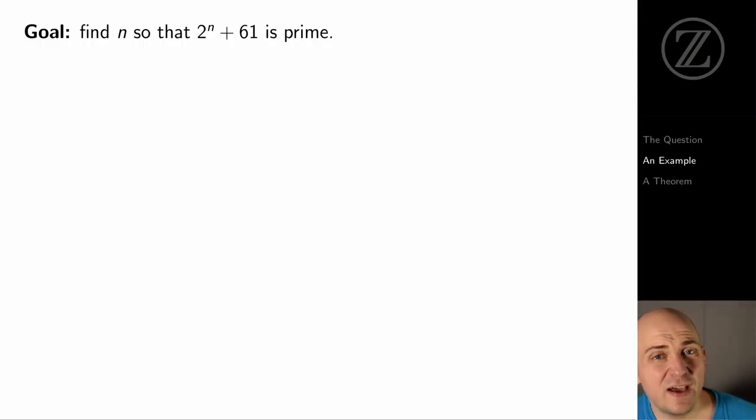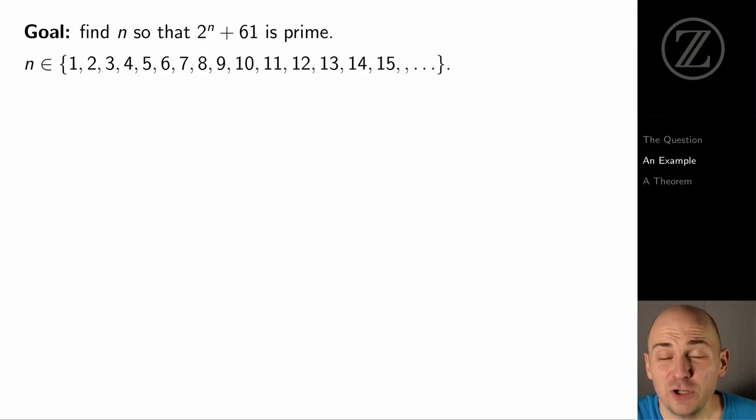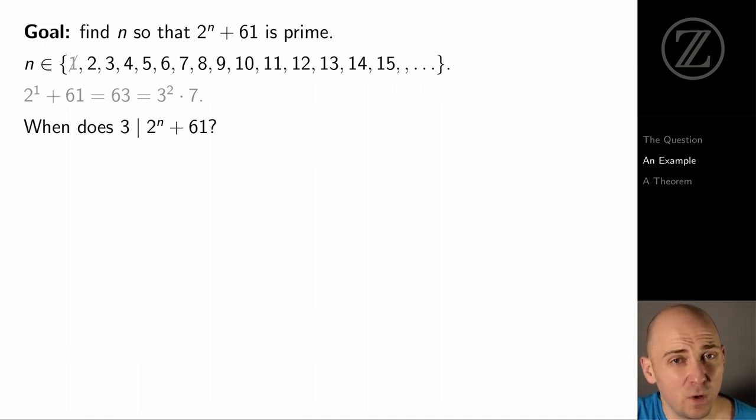So here's our goal. We want to find an n so that 2 to the n plus 61 is prime. We could just start trying different values of n. So when we try n equals 1, we note that 2 to the first plus 61, that's 63. And 63 is a multiple of both 3 and 7. It's not prime. So n equals 1 doesn't work.